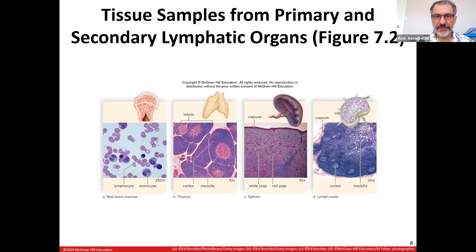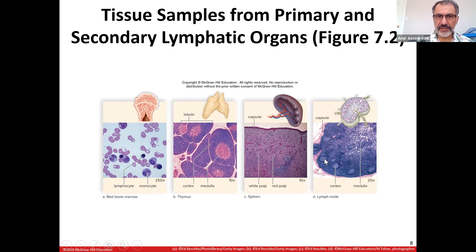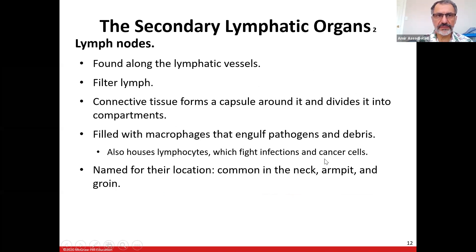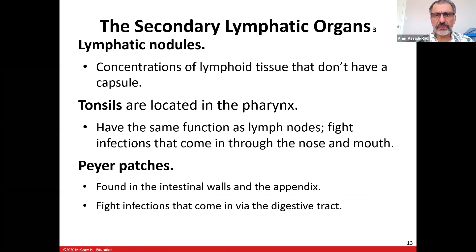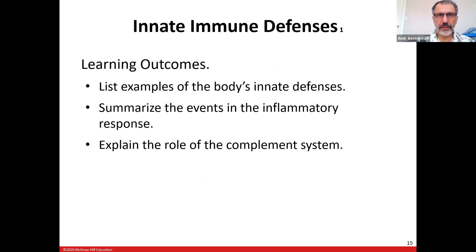Right here — you're seeing a lymph node, and inside of it these are lymphatic nodules. Those little circles right here are lymphatic nodules. Tonsils are located in the pharynx. Peyer's patches are found in the intestinal walls and appendix and fight infections that come over the digestive tract — they look like lymph nodes.